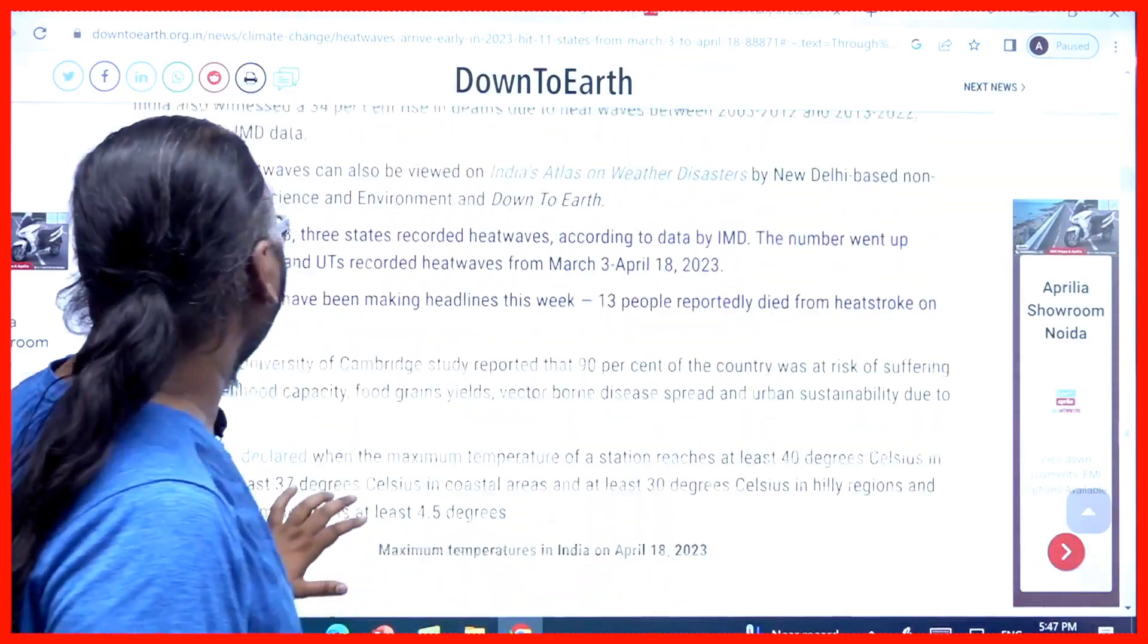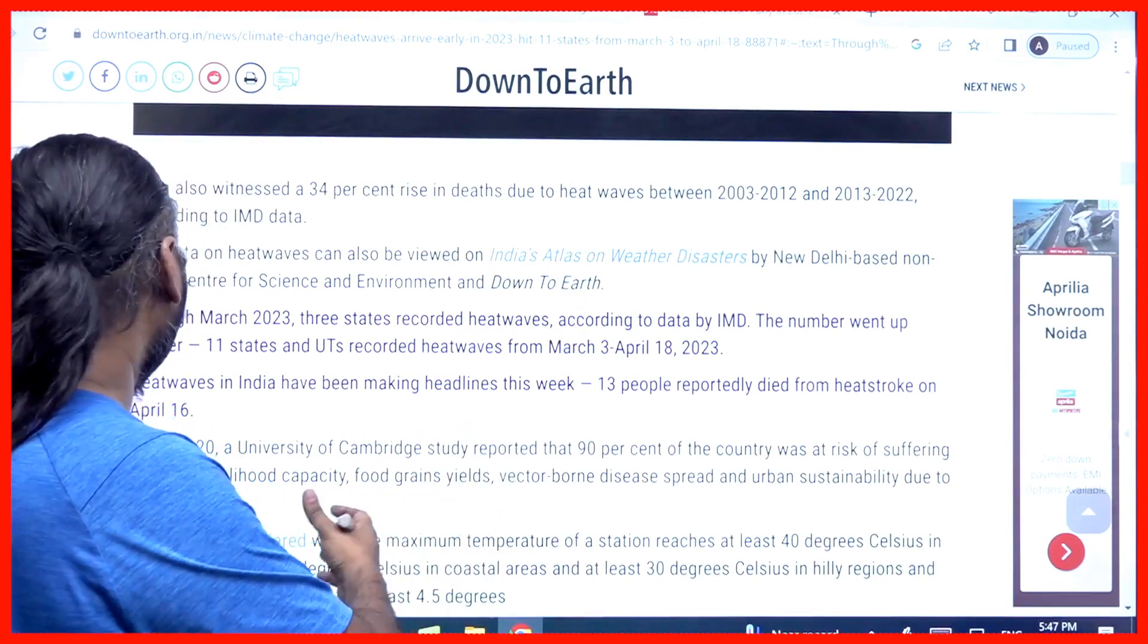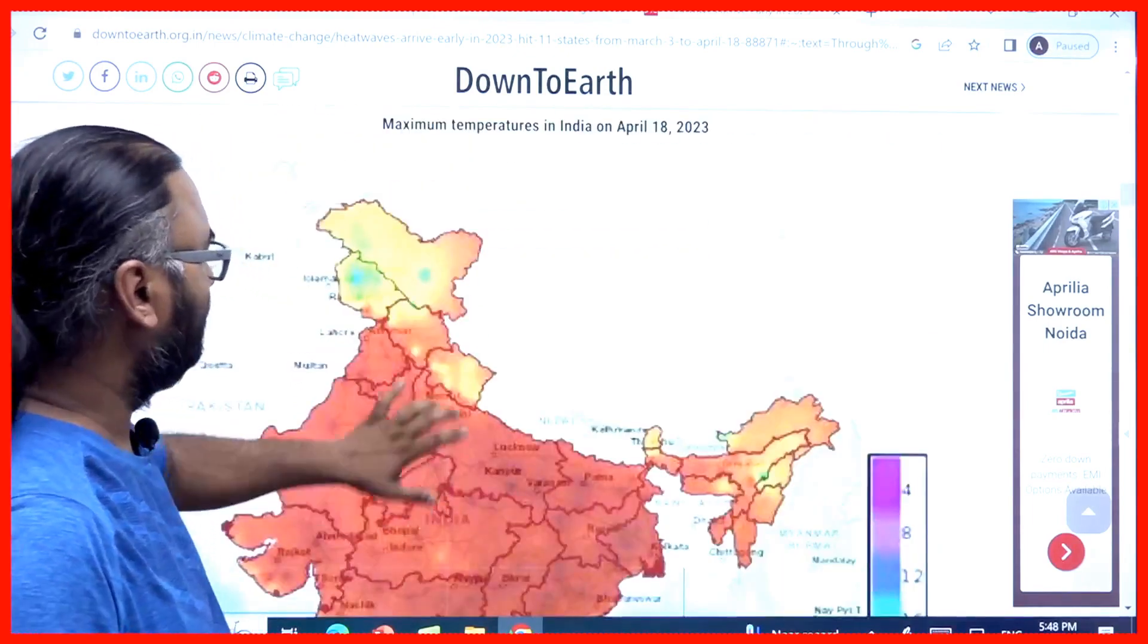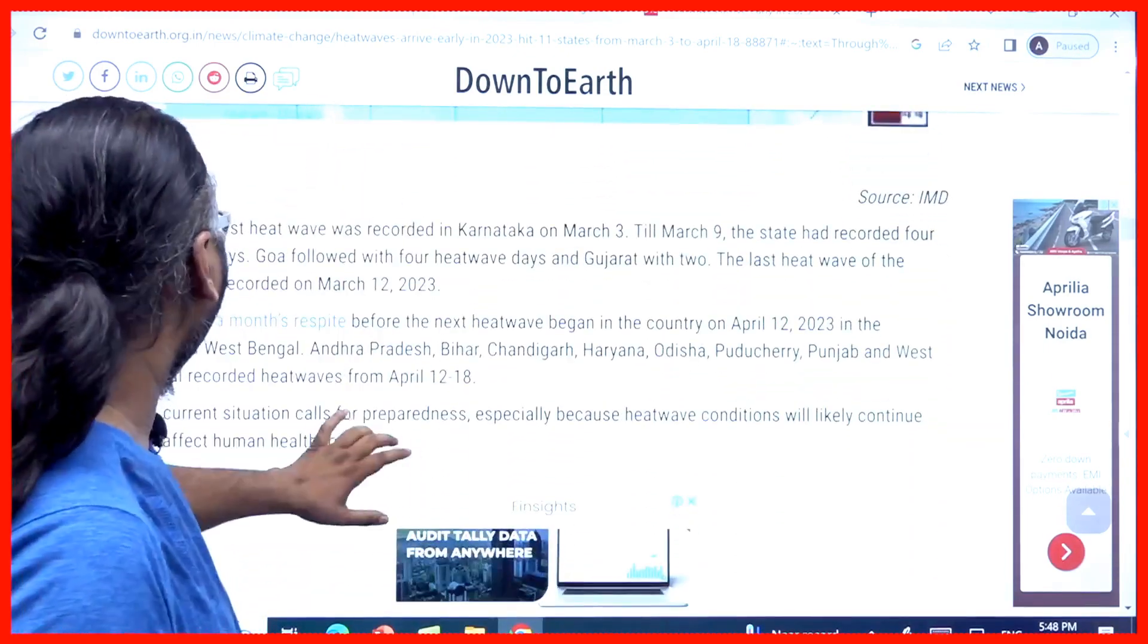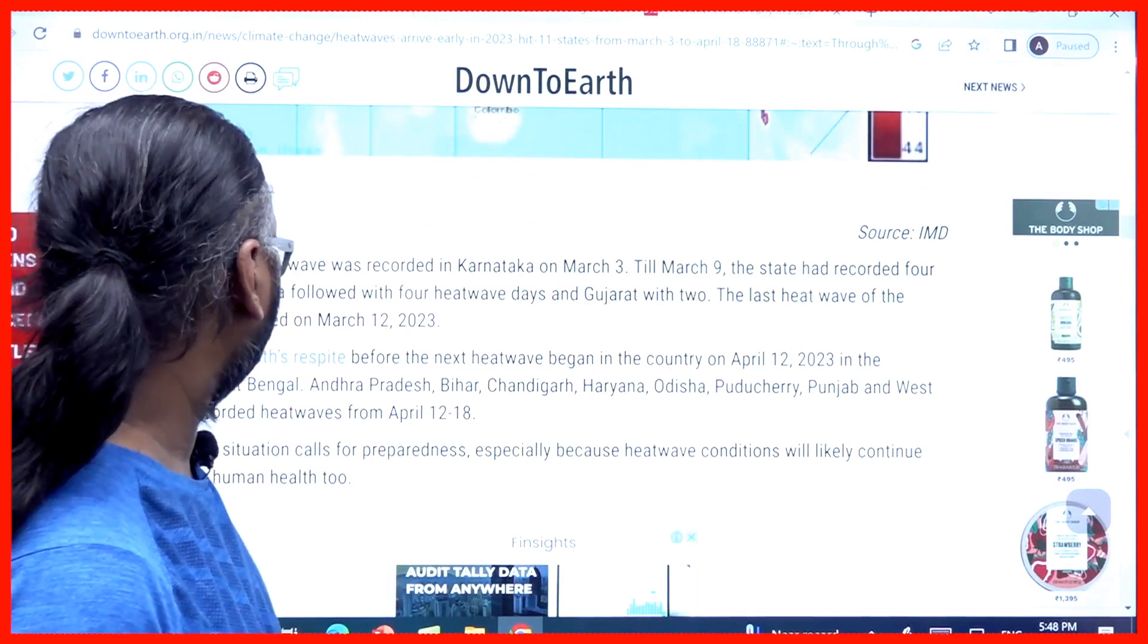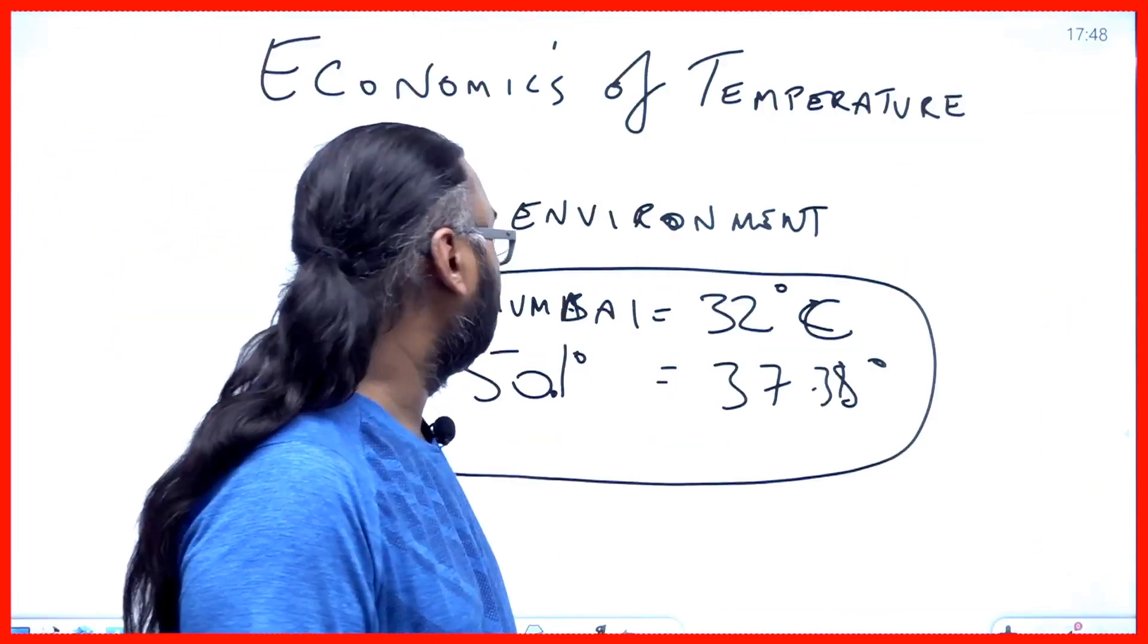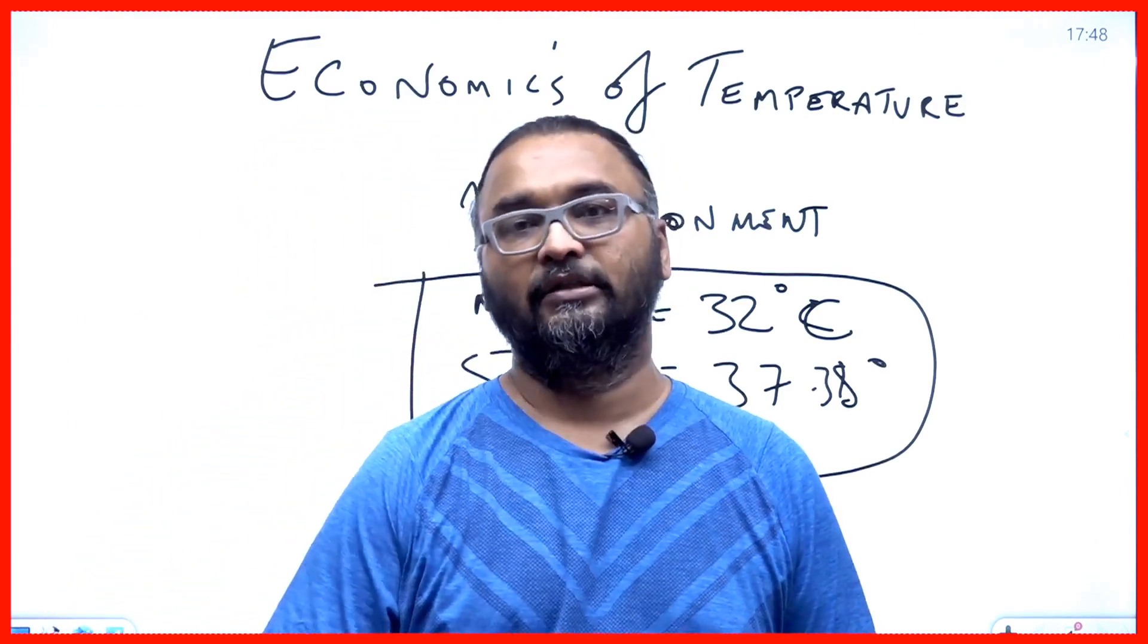In India for instance, if you see the heat wave came early and 13 people reportedly died from heat stroke. Before 2016, the heat wave impacted almost all of the peninsular region of India and it was recorded first in Karnataka on March 3 and then it went further up.